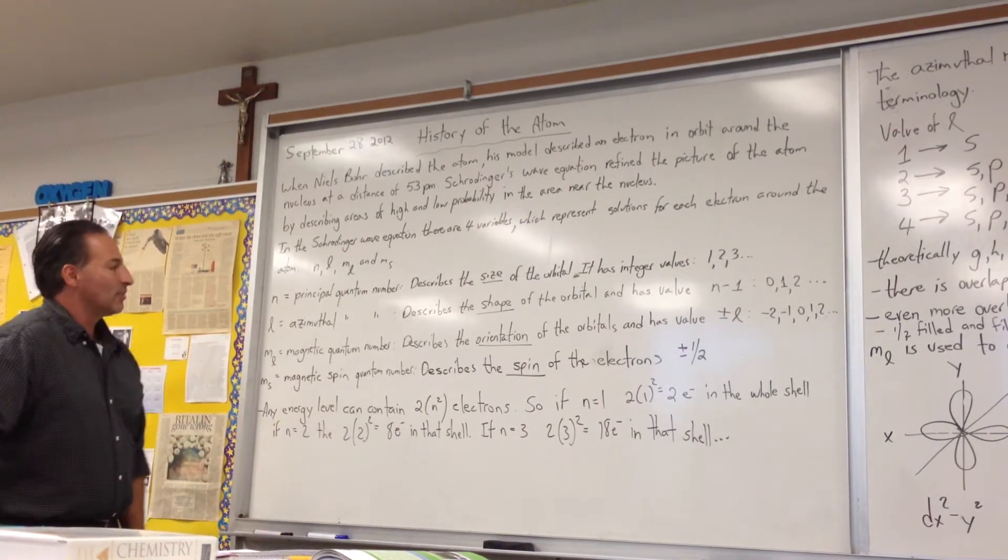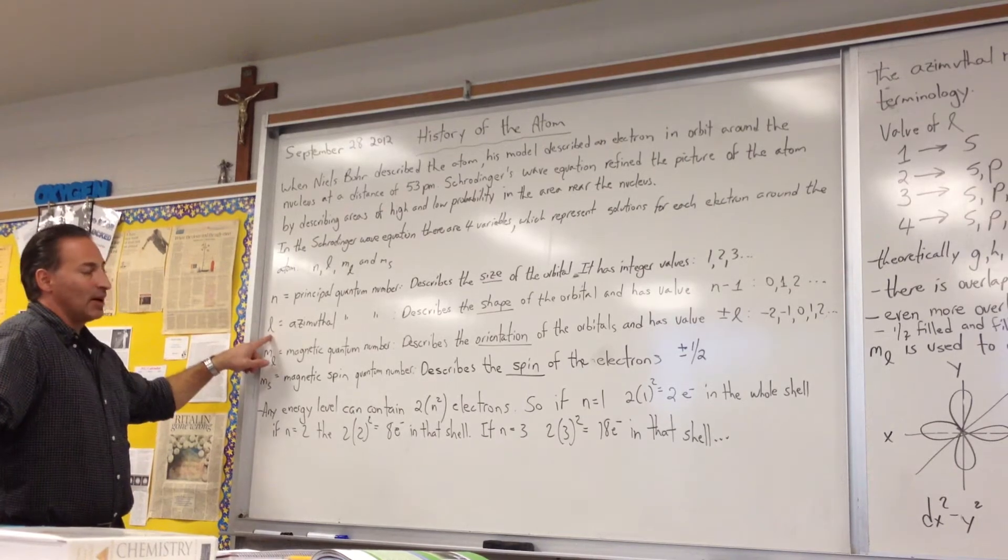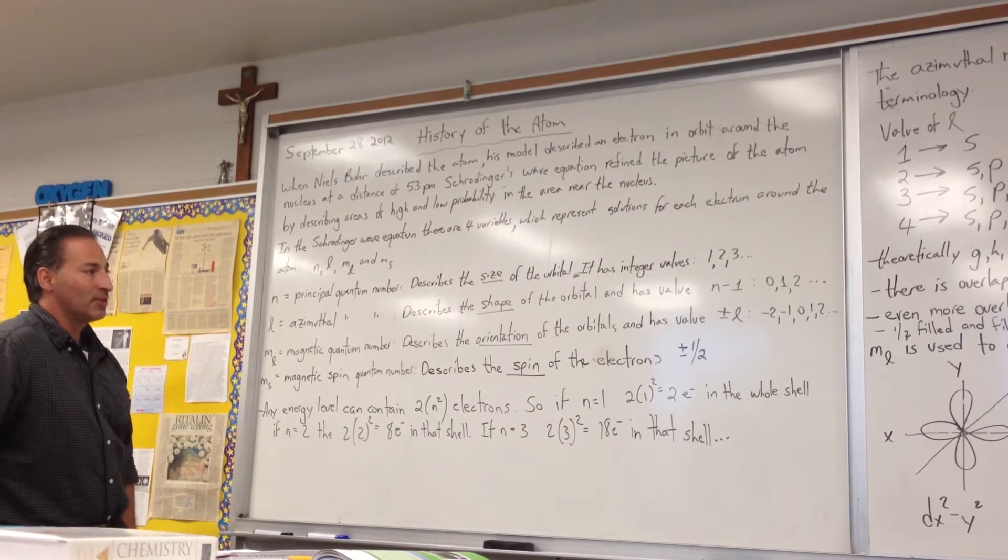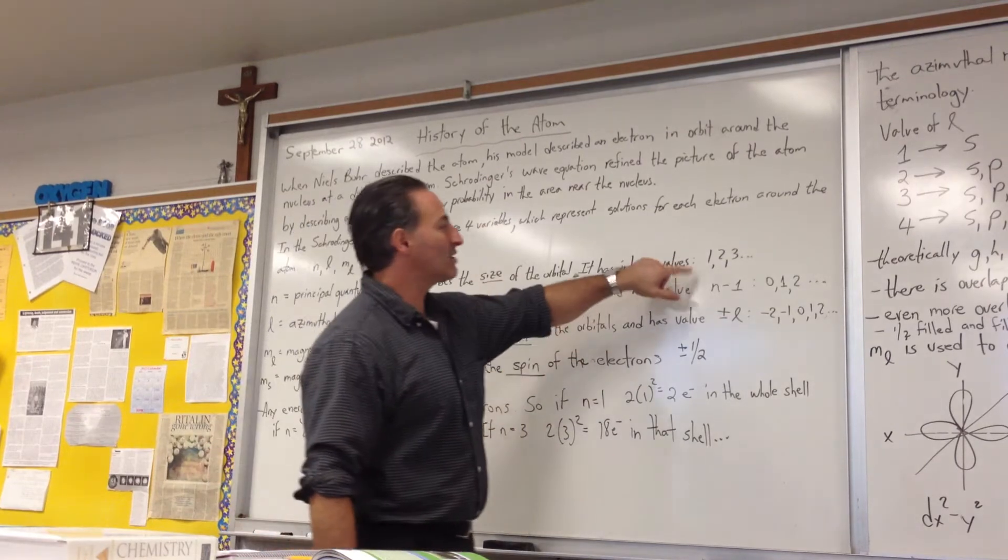The next number is the azimuthal quantum number, represented by the lowercase letter L. This number describes the shape of the orbital and has a value which is N minus 1.